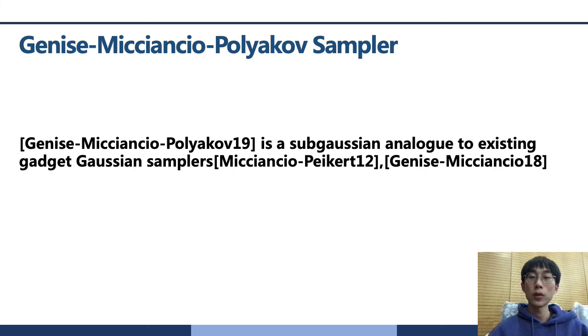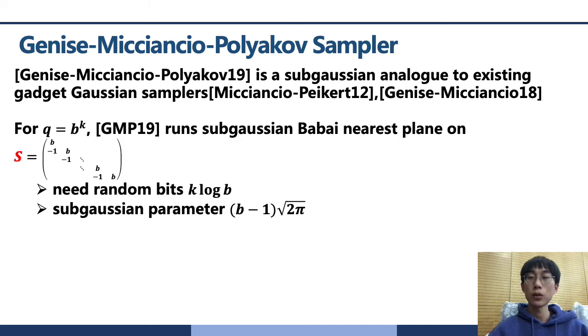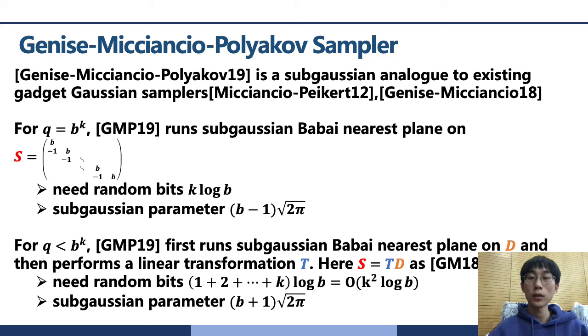Genise-Micciancio-Polykov has a sub-Gaussian analog to existing gadget Gaussian sampler. Specifically, for the case of the power B modulus, GMP-19 runs sub-Gaussian by biased nearest plane on B^k S. These algorithms achieve sub-Gaussian parameter (b-1)√(2π) with k log B random bits. For the arbitrary modulus, it performs a sub-Gaussian by biased nearest plane algorithms on T and applies a linear transform of T to lift the solution to gadget lattice. Here, S equals T times D as in GM18. In the end, this algorithm requires k squared log B random bits and achieves the sub-Gaussian parameter at most (b+1)√(2π).